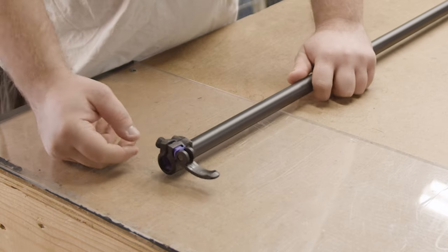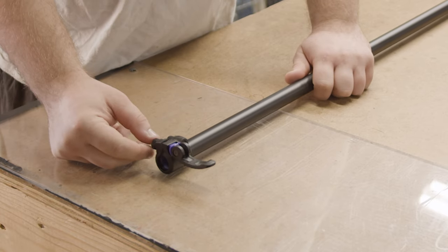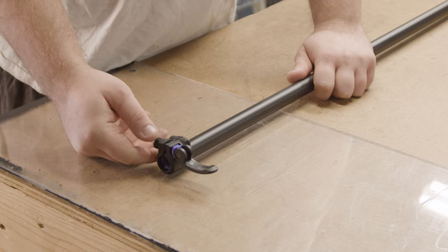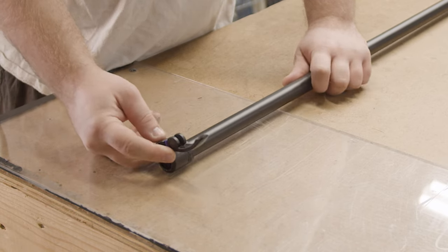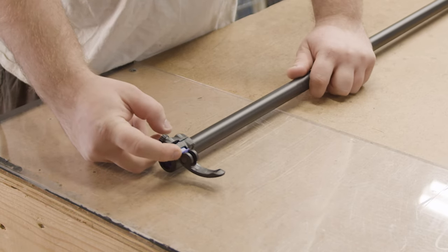So the next step is actually taking the clamp off. You're going to want to open your lever, make sure it's loose enough where most of this purple here is showing.